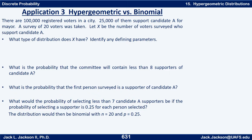Here's another example. Suppose there are 100,000 registered voters in a city; 25,000 of them support candidate A for mayor. A survey of 20 voters was taken. Let X be the number of voters surveyed who support candidate A. What type of distribution does X have? What's the probability the committee will contain less than eight supporters of candidate A? What's the probability that the first person surveyed is a supporter? And what would the probability of selecting fewer than seven supporters be if the probability of selecting a supporter is 0.25 for each person?